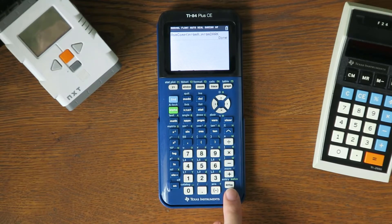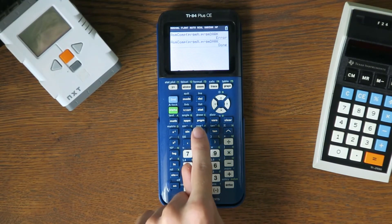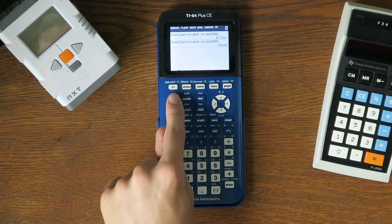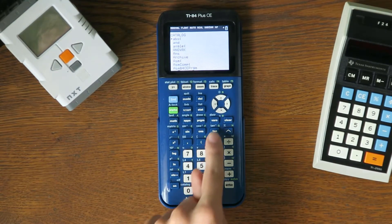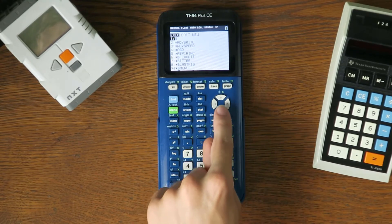Now here's where the steps differ a bit again. If you have an OS lower than 5.3.0, then you need to press second, then zero, then scroll down to ASM and press enter. If you have OS 5.3.0, then you can omit the ASM token.